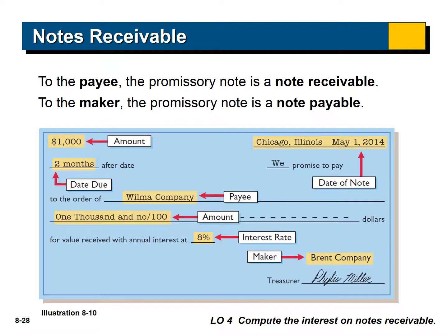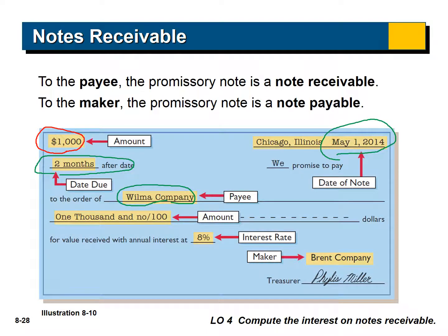Here's what a note looks like. It has the amount in the upper left corner and the date it was signed in the upper right corner. The due date is determined from how far after the signing date — for example, two months after May 1st is when it's due. It has the payee (to whom you owe), the amount of $1,000, the interest rate, and finally, the maker of the note.